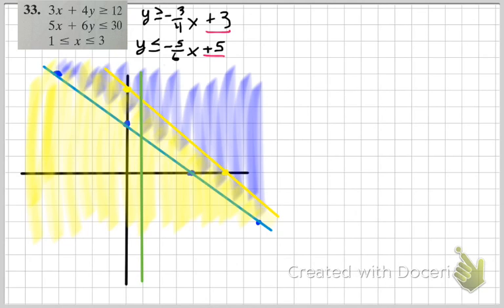Let me pick a different color for that line. Try a little brighter. So we have x equals 1. And then we have x equals 3. And since our x is squished in between on the graph, we shade everything squished in between.